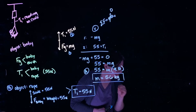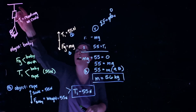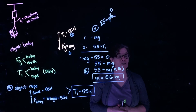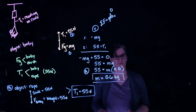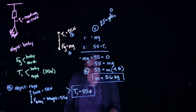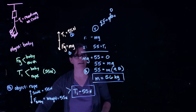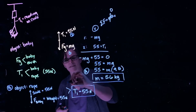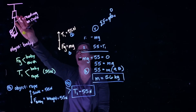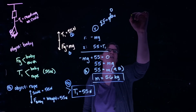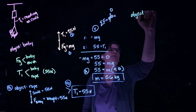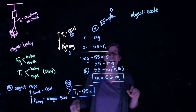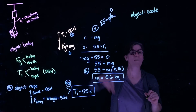Part C asks: what is the tension in the rope above the scale? We might want to consider the object being the scale itself in this part, because the scale is what's interacting with that rope up top.